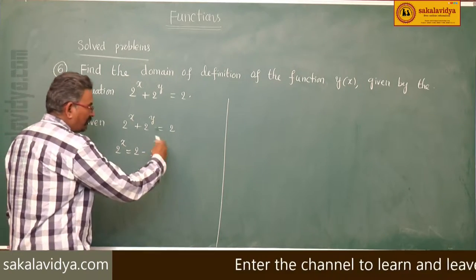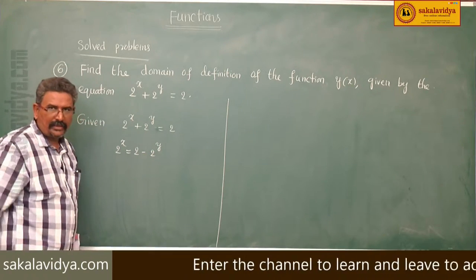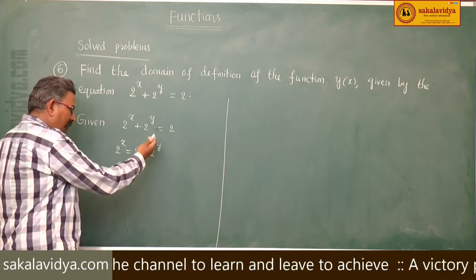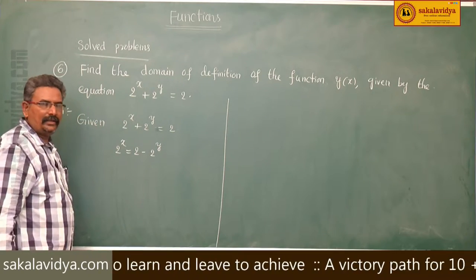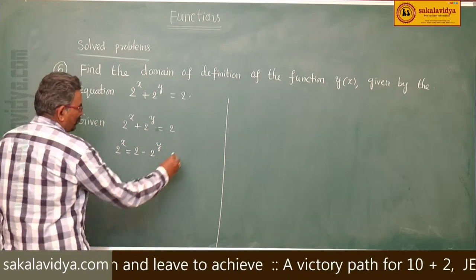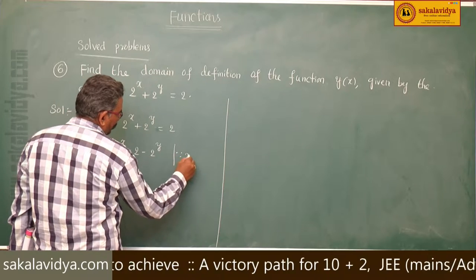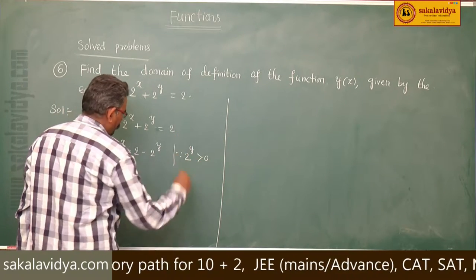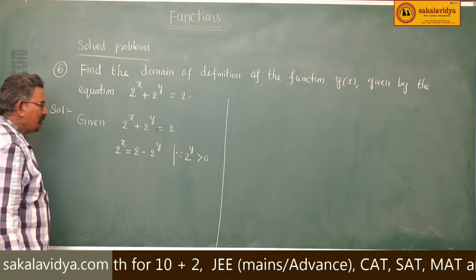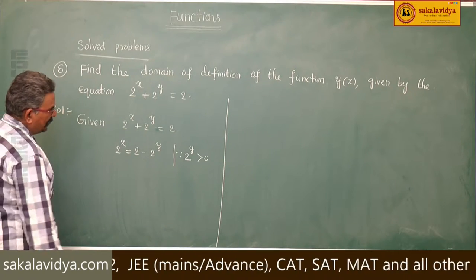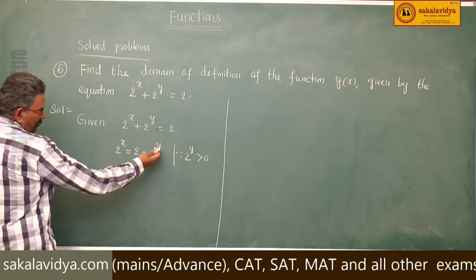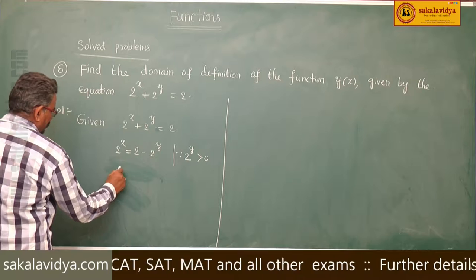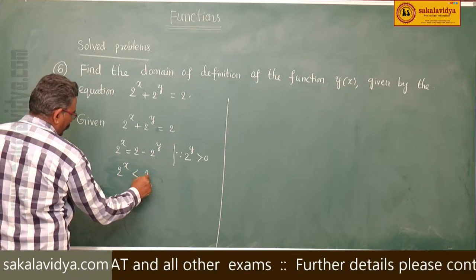This 2 power y is an exponential function. For all real values of y, 2 power y will be greater than 0. That means 2 power y is always positive, so 2 power x is less than 2.